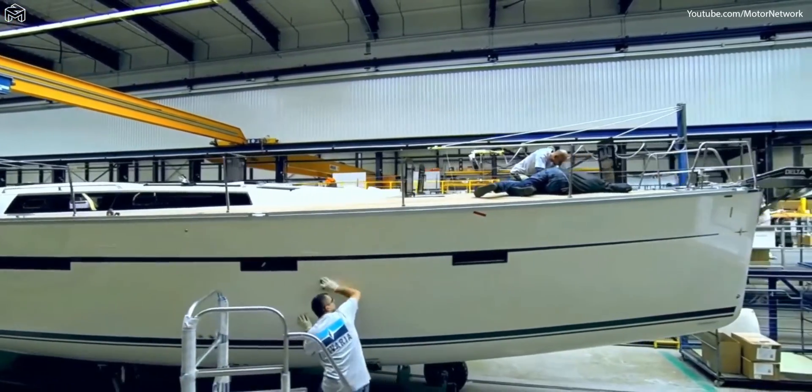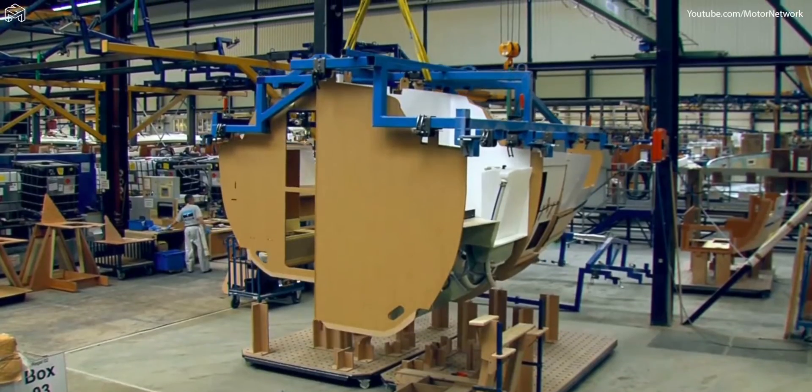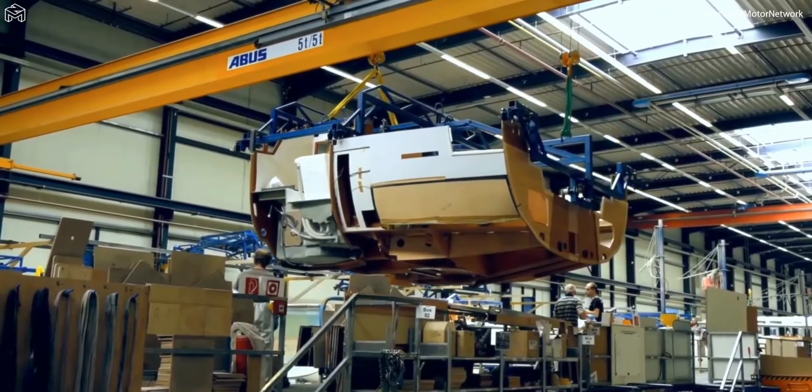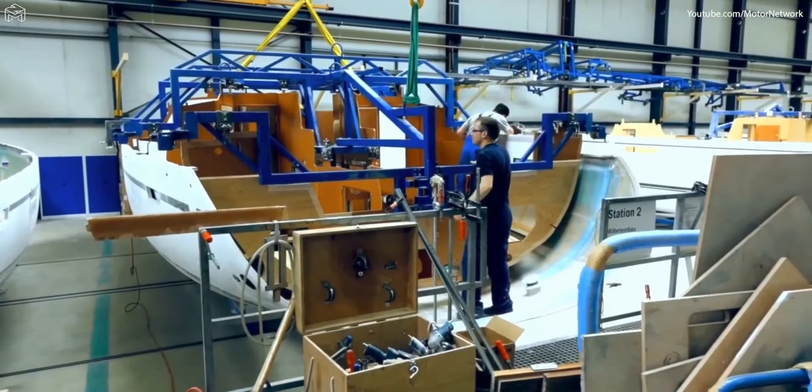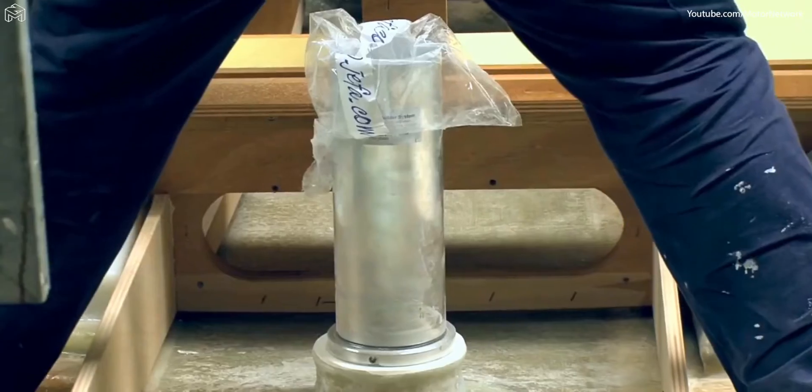The components already made in the joinery are now fitted directly into the yacht using a crane. The floor section added in advance ensures that each bulkhead fits in its allotted place to the exact millimeter.